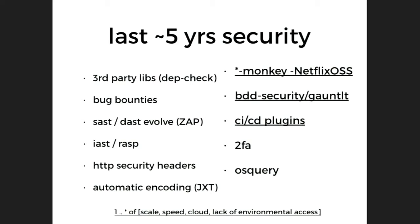This is a somewhat jaded view — my view, not everybody else's. In the last five years we've done some great things: A9 came out in the OWASP Top 10, we've talked about third-party libraries starting in 2013, and we've made significant progress there. We've got OWASP Dependency Check doing great work. We've invented bug bounties. SAST and DAST have evolved, and OWASP ZAP is doing interesting things. We've talked about automatic encoding, and we've started plugging into the CI/CD pipeline — a great way to meet developers.